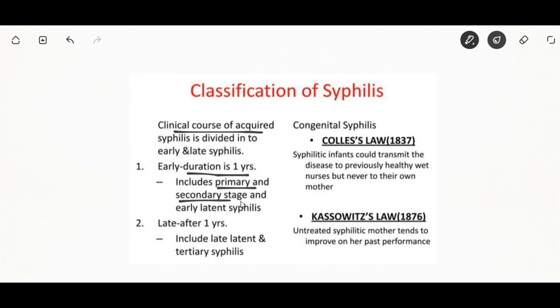The primary stage presents with a single chancre — a firm, painless, non-itchy skin ulceration. In secondary syphilis there is a diffuse rash frequently involving the palms of the hands and soles of the feet, and there may be sores in the mouth or vagina. In latent syphilis, which can last for years, there are few or no symptoms. In tertiary syphilis there are gummas — soft, non-cancerous growths — and there can be neurological or heart problems.